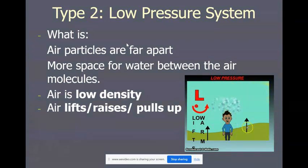Now we're going to move on to the right column, and we're going to talk about type 2, low pressure systems. So the three things you need to write down for what it is: this is where the air particles are far apart. That means that there is more space for water to get between my air molecules. Since the particles are far apart, the air in a low pressure system is low density. Because it's low density, that means it's going to lift, raise, pull. Another word we're going to use is it gets sucked up into the air like a straw. This is going to show up in analogies later on. So if we look at the guy right here on the gif, we see that that low pressure air is—because it's less dense, it is rising up.